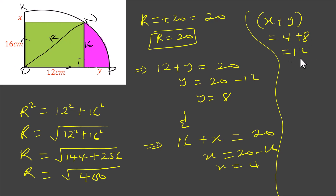So Y is 8 and X is 4. Therefore X plus Y equals 4 plus 8, which is 12. So X plus Y equals 12. Thanks for watching, and don't forget to subscribe for more exciting videos.